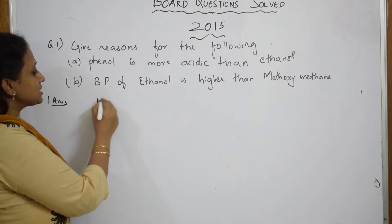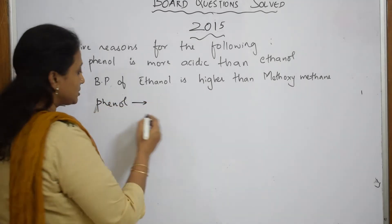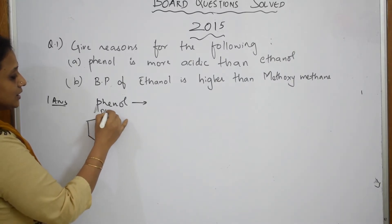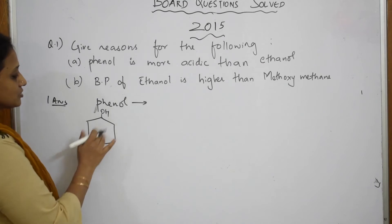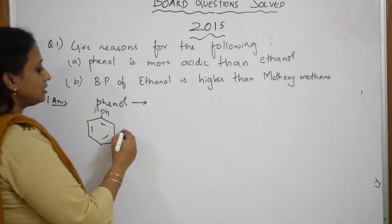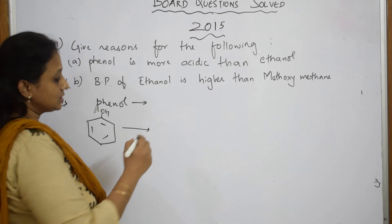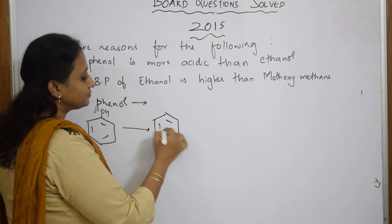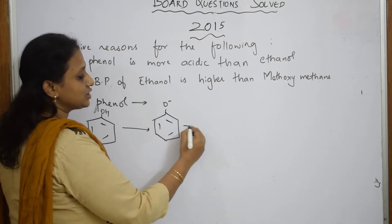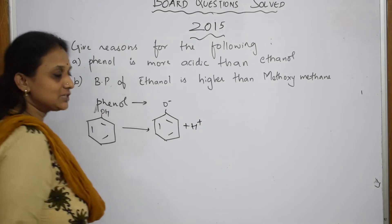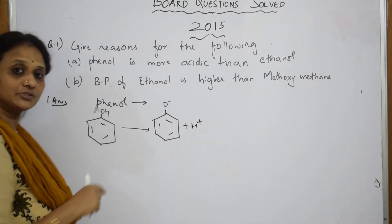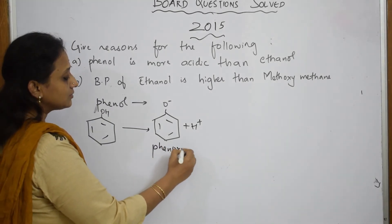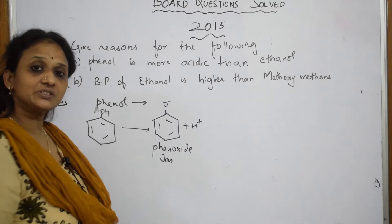First, when I speak in terms of phenol — in phenol, how is the structure? Your phenol structure is basically a benzene ring with an OH group. When phenol is dissolved in solution, it breaks up into two: one is your phenoxide ion and your H+. It releases H+ because of the electronegativity difference — oxygen is highly electronegative and it drags the electron density. This is your phenoxide ion.